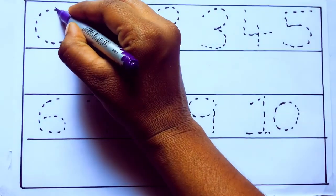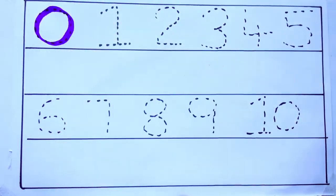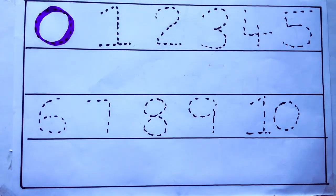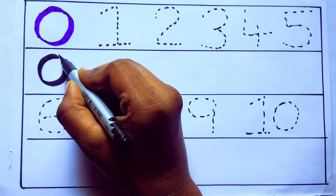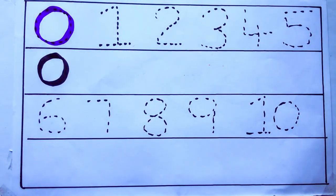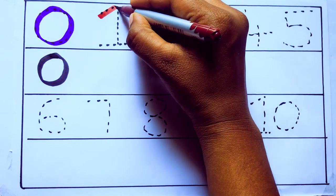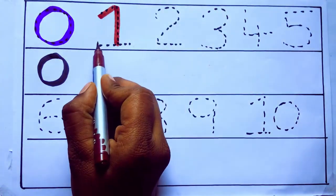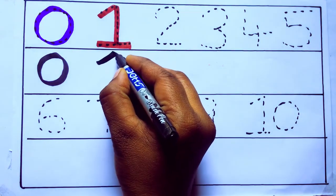Violet color, 0, Z-E-R-O. Brown color, 1, O-N-E, 1. Number 1.